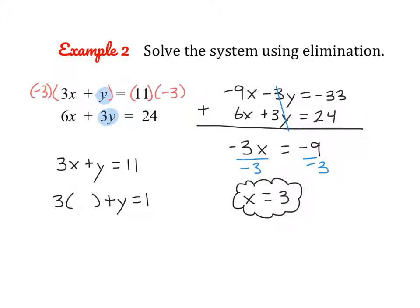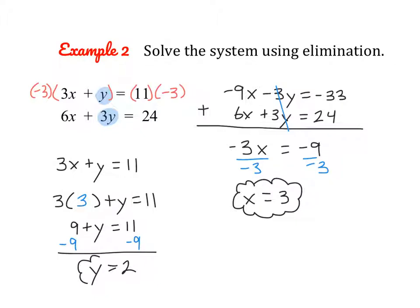To finish solving, we still need to find y. Substituting x equals 3 into the first equation, we get 9 plus y equals 11. The opposite of positive 9 is negative 9, leaving y equals 2. So our final answer is the ordered pair 3, 2.